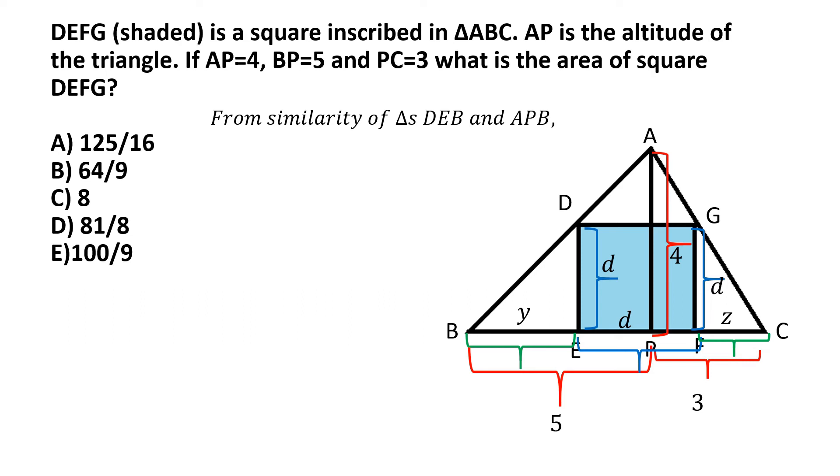And similar triangles have this property that ratio of their corresponding sides are equal. So if we consider triangle DEB, we can consider the sides that are of length d and y. So basically DE and BE, so DE is of length d, and BE is of length y.